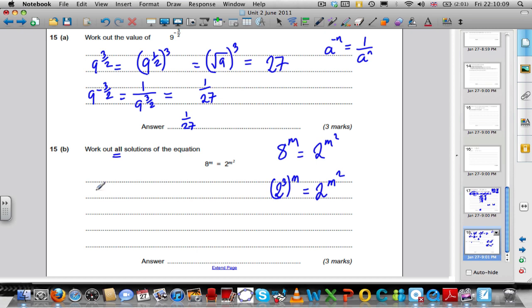Now, the power of the power rule, if you've got a base number to the power of, say, b, and all of that is raised to the c, it's the same as the base number to the power of b times c. So, 2 to the 3 to the m is the same as 2 to the 3m, 3 times m, and that, again, is equal to 2 to the m squared.